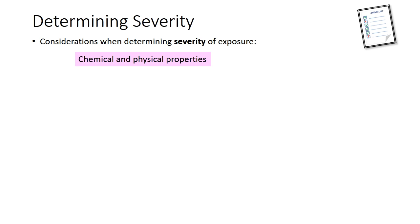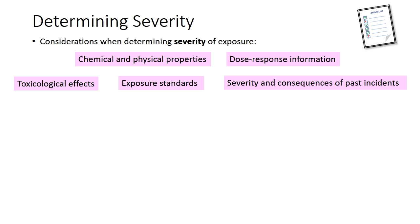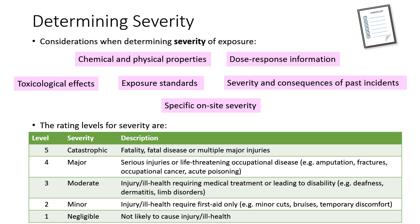When determining severity of exposure, the following considerations should be noted: chemical and physical properties, dose-response information, toxicological effects, exposure standards such as permissible exposure limits, severity and consequences of past incidents if any, and specific on-site severity. These considerations enable laboratory staff to determine severity ratings as shown in the table, ranging from 1 (negligible) to 5 (catastrophic).